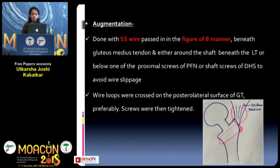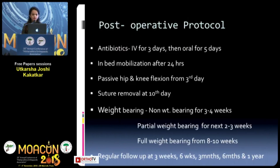The wire loops were crossed along the posterior lateral surface of the greater trochanter, tightened using a tensioner, and the screws were then tightened. The post-operative protocol was similar to all hip fractures, and weight bearing was allowed as per the X-rays suggesting the union and stability of the fracture fixation.